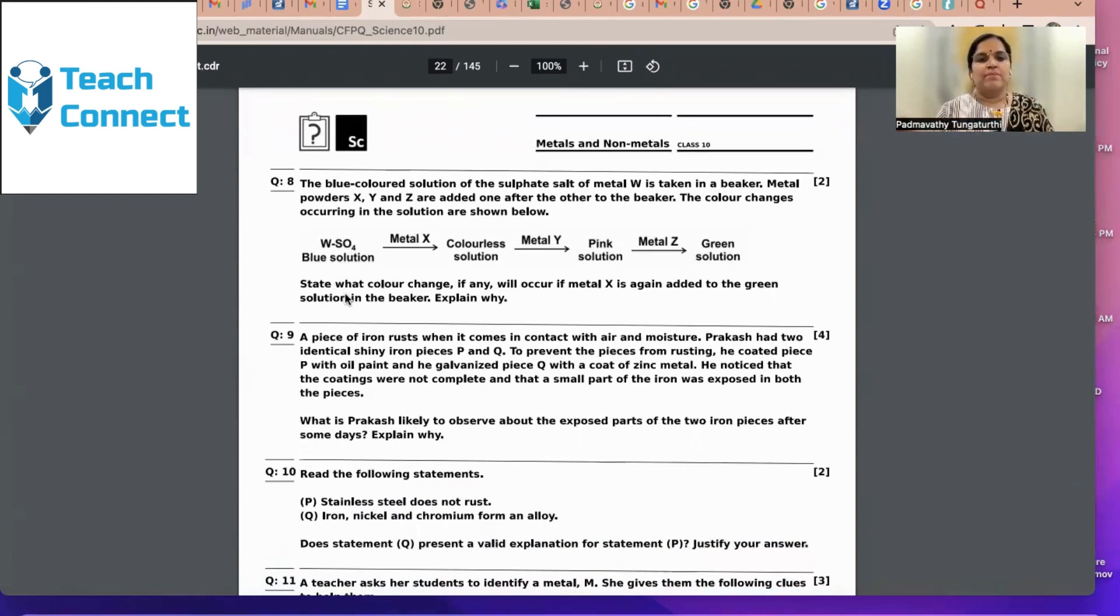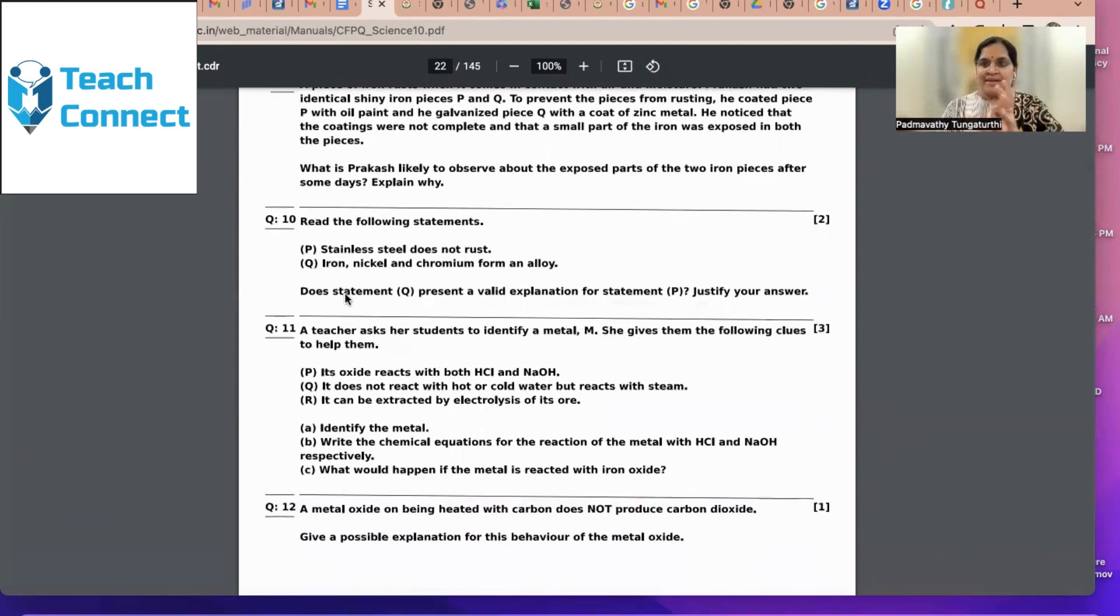Some of these questions do not even require reactivity series. Now, when W-sulfate, metal X, that means metal X is reacting with W, means X is placed higher than W-sulfate. Now, X-sulfate is formed. This is a compound. Metal Y reacts with this. Y becomes Y-sulfate. Then, Y-sulfate reacts with Z. That means Z is in higher state. Z, Y, X and W-sulfate. Now, the green solution will not react with metal X again because metal X is lower reactivity and the green sulfate solution is higher reactivity status. That's how children can completely understand rusting, alloy formation, and the reactivity series.